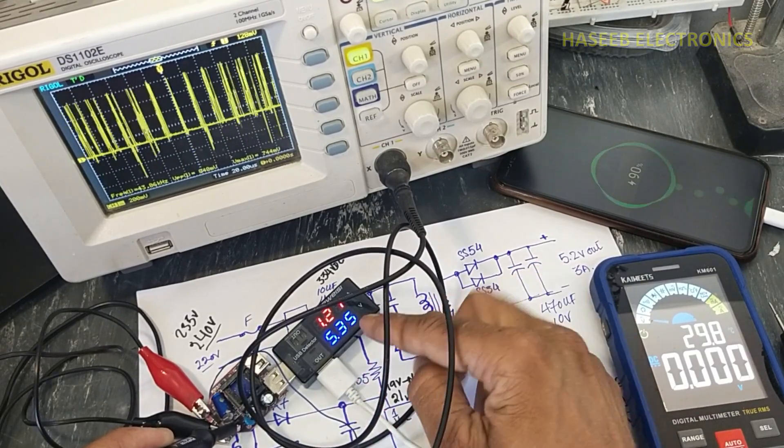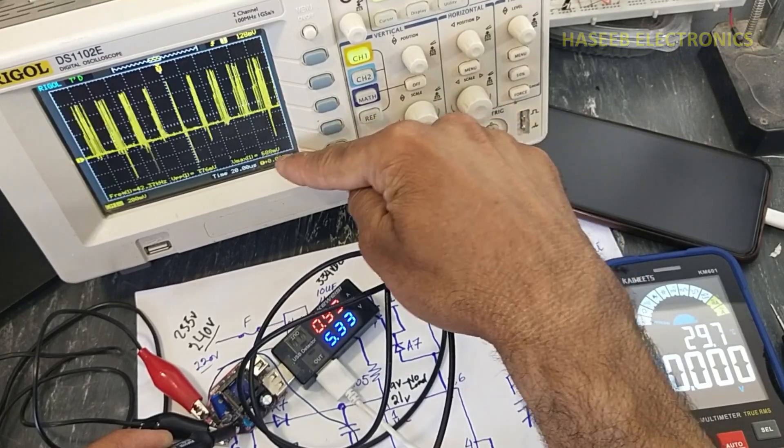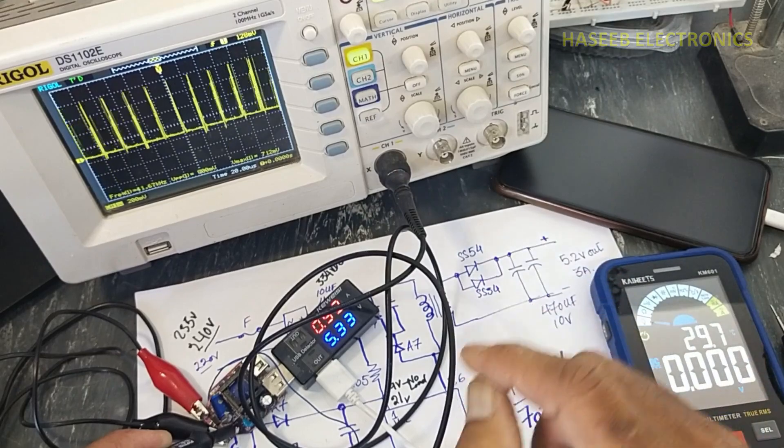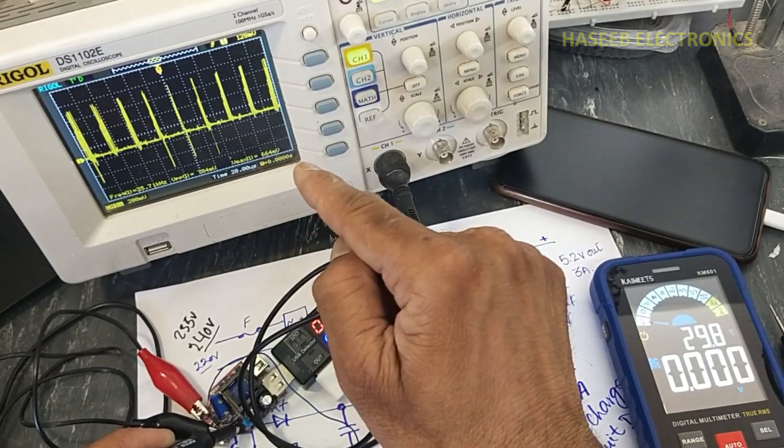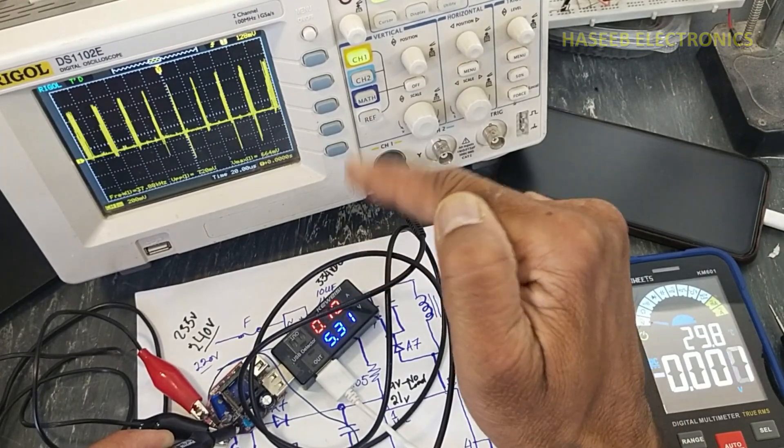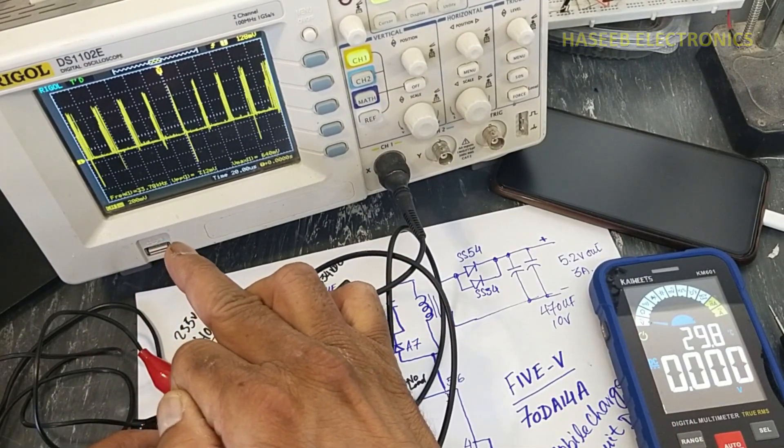But when we connected load at 1.1 ampere, we can see it is 700, 800 millivolts peak. These voltages are dropped across this resistor when this IC is switching. This time it is switching at 37 kilohertz.